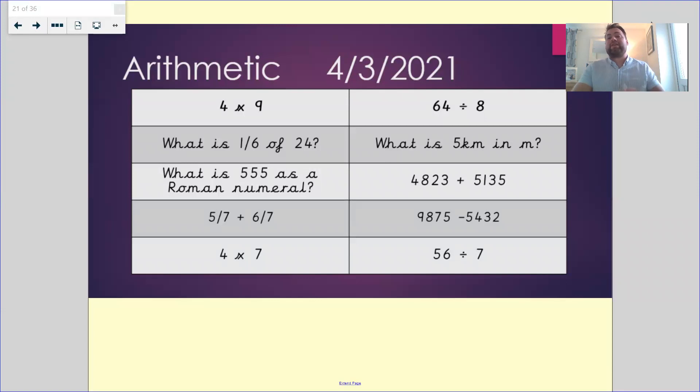What is five kilometers in meters? There are 1000 meters per kilometer. So 1000 multiplied by five gives you 5000.